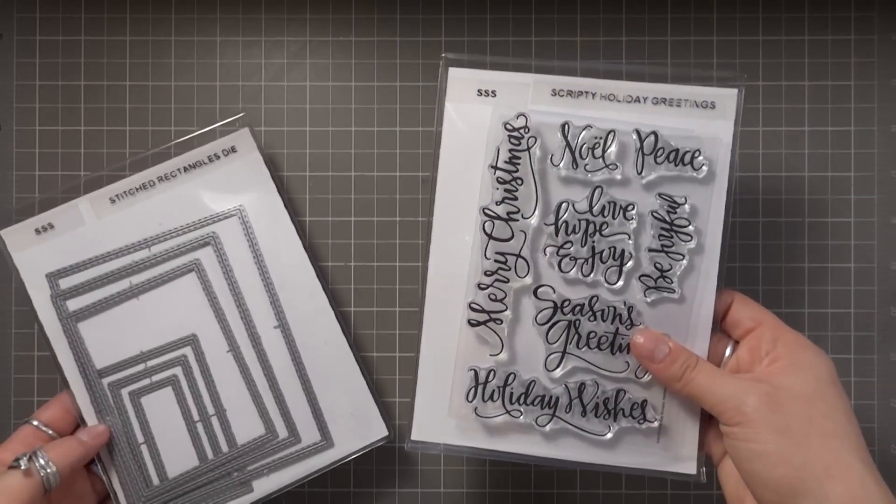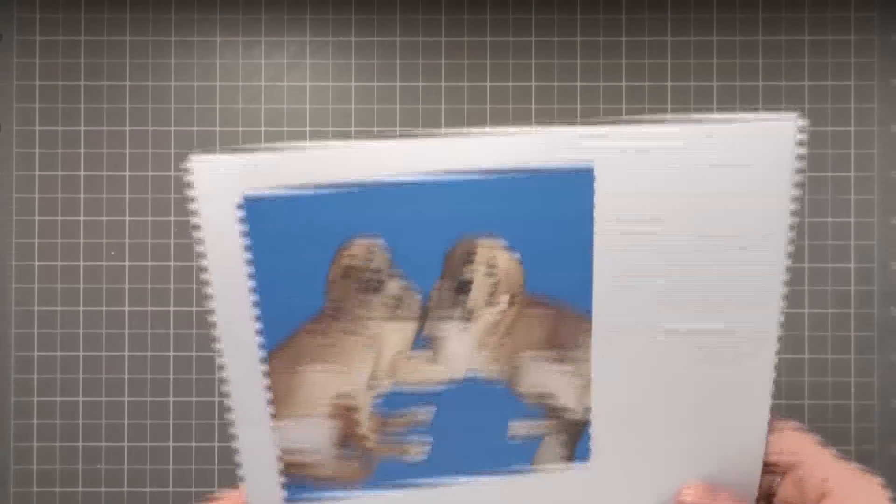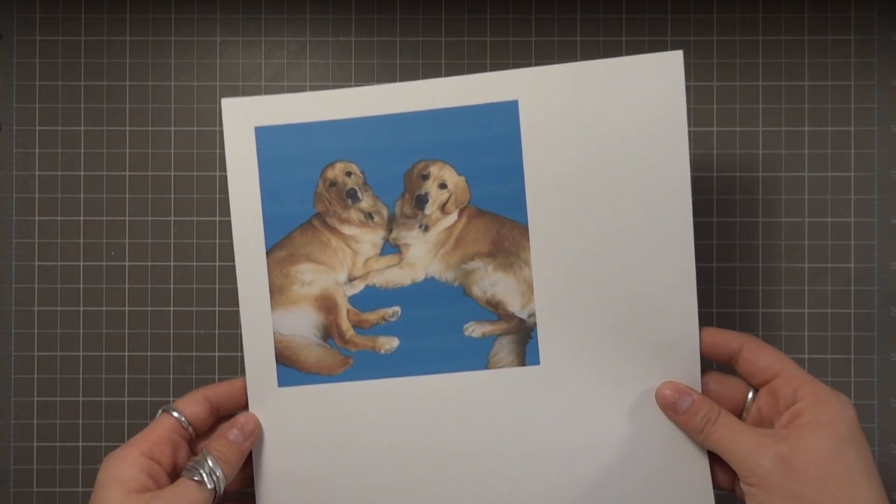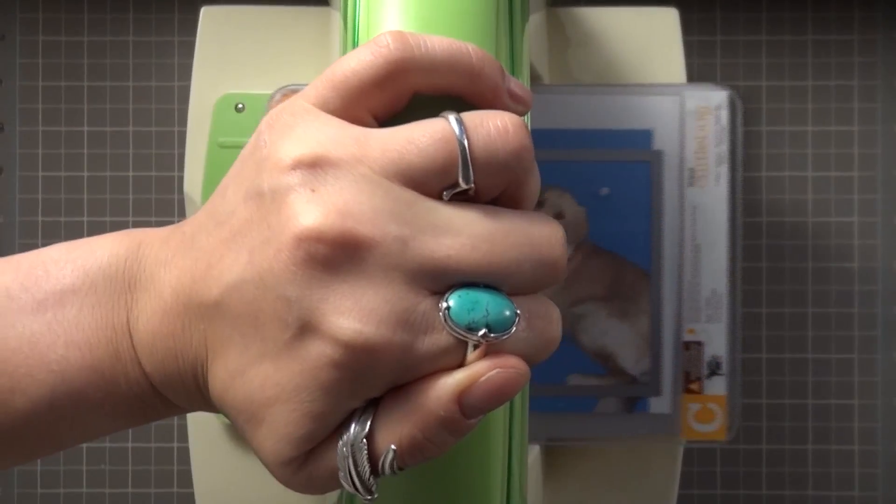Today I'm making a shaker ornament using my stitched rectangle dies and scripty holiday greetings from Simon Says Stamp featuring my two puppies Chase and Jackson. If you've been keeping up with Vlogmas you would have seen them in previous crafting videos and now they're back again.